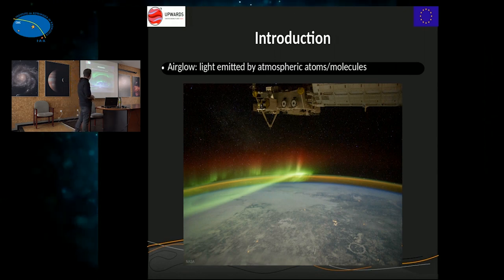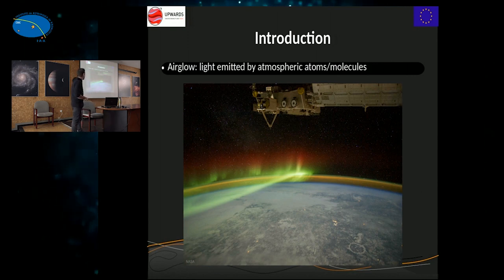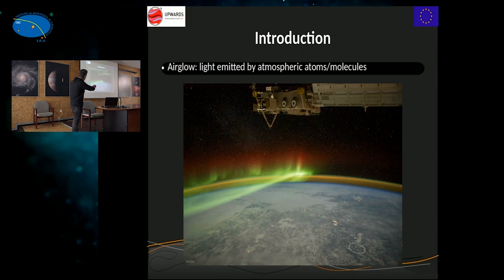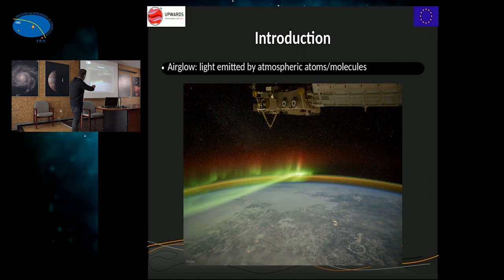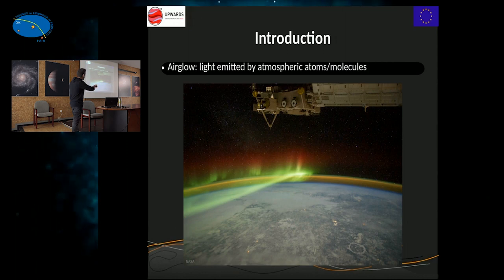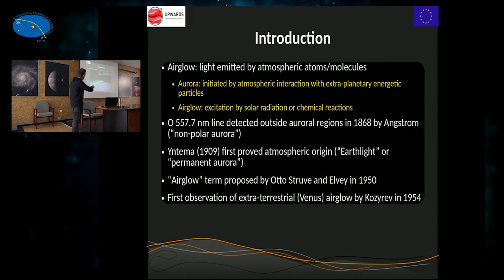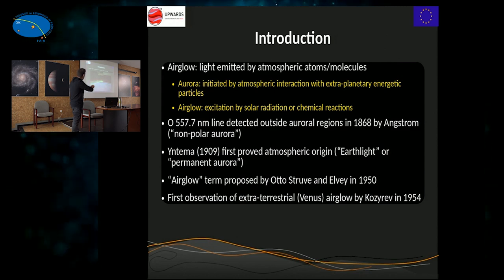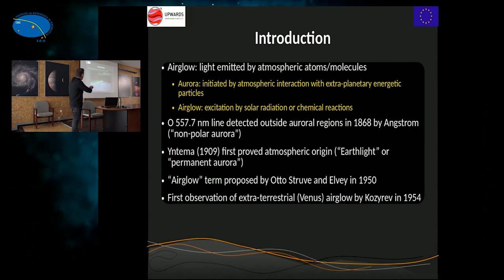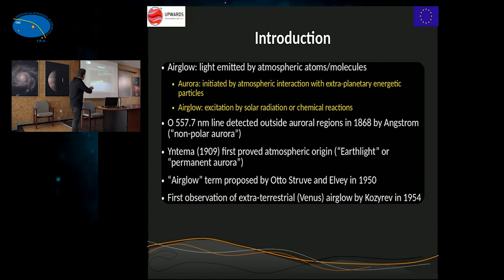In this nice picture taken from the International Space Station, you can see the aurora — the green and red stripes — but you can also see some other light emitted by the atmosphere. It's much more widespread and doesn't show much structure like the aurora. This is airglow — or this is the visible part of the airglow.